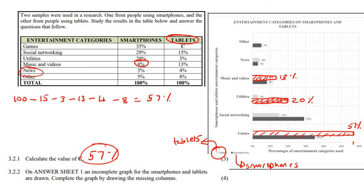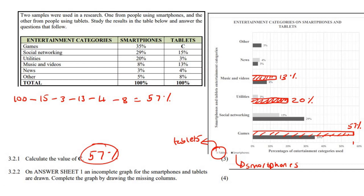For news, both bars are already drawn — 3% and 4%. For 'other', which is the last category, we've got the smartphones at 5% already shown. We still need to draw the tablets at 8%. So 8% goes here, and we label it 8%.